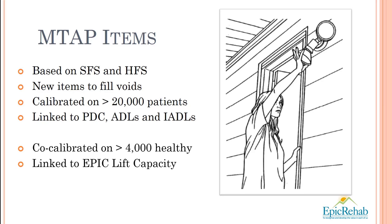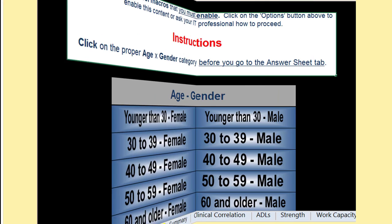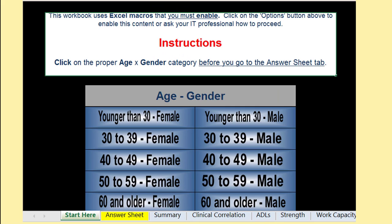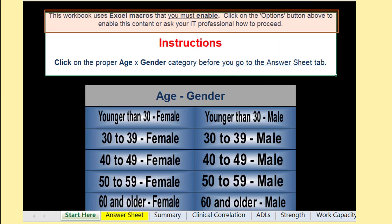Now let's get started with the MTAP analytics software. I'm assuming you've contacted Matheson Development to purchase it. The software is composed of Excel macros, which are lines of computer code in an Excel workbook. Launch the workbook by double-clicking on the icon for the MTAP analytics Excel file. After you launch the software, you'll need to enable the Excel macros that are built into it. The macros will be temporary code that will exist on your computer until you close your MTAP analytics session and shut down Excel. Click here to enable the macros.